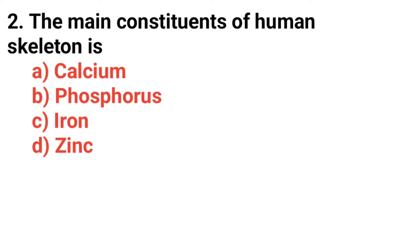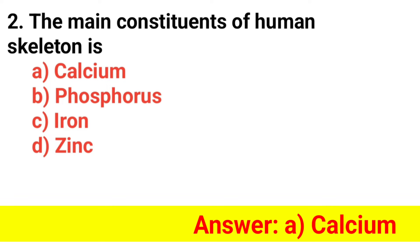Question 2. The main constituent of human skeleton is? The answer is option A — Calcium.